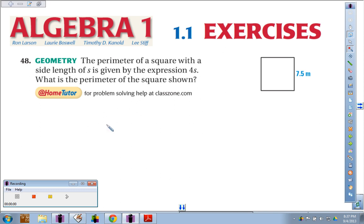In number 48, we've got the perimeter of a square with a side length of s given by the expression 4s. That makes sense.